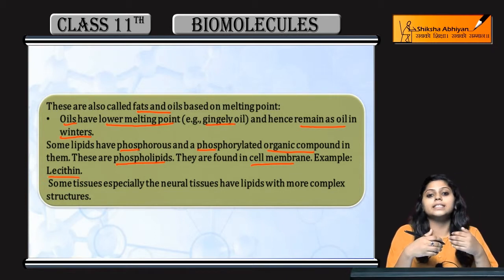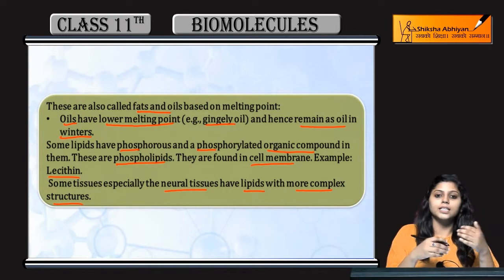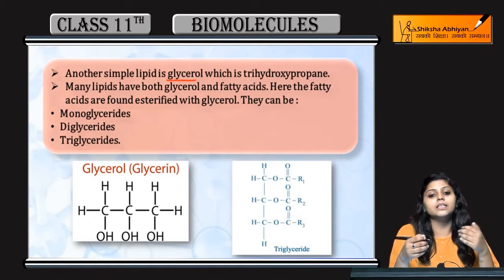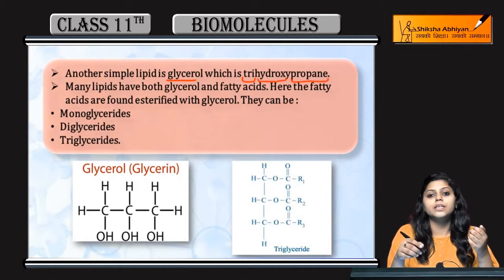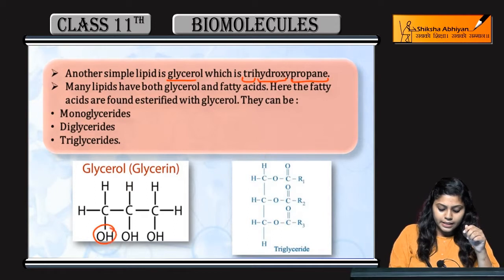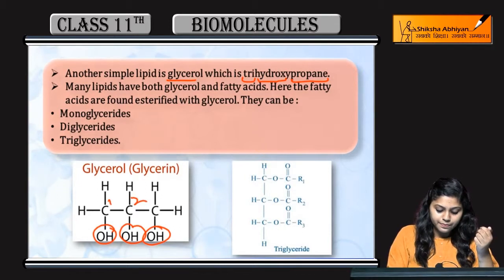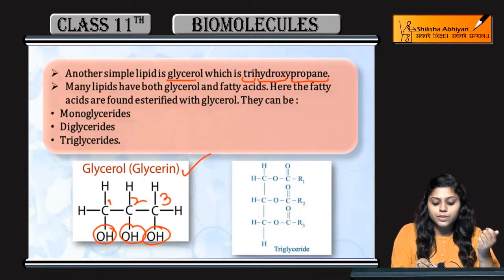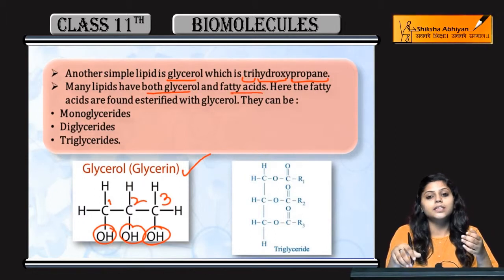Example hai iska - lecithin. In some tissues, like neural tissues, they have lipids those are more complex structures - simple nahi hootay. Some lipids can be glycerol. Glycerol kya hootay hai - tri hydroxy propane. Tri hydroxy means three hydroxyl OH groups hoongay, and propane means three carbons. So glycerol is tri hydroxy propane.